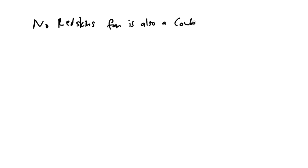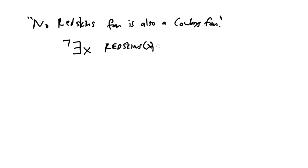Let's do another one. What if I say: "No self-respecting Redskins fan is also a Cowboys fan"? Those two things are held in our part of the country to be mutually exclusive. How would you express this in predicate logic? Here's one way: there does not exist an X such that Redskins(X) and Cowboys(X). This is saying you can't find a single example of someone who is both a Redskins fan and a Cowboys fan.